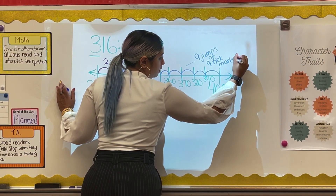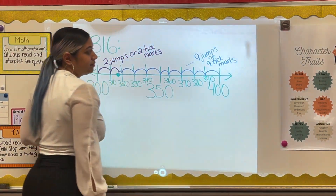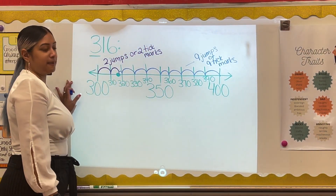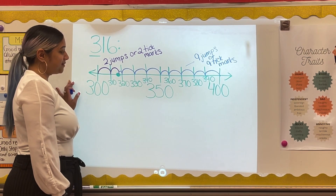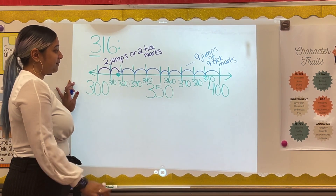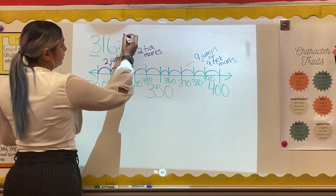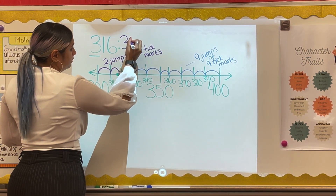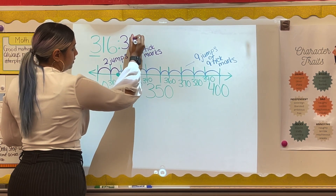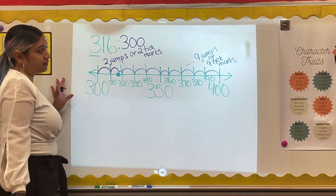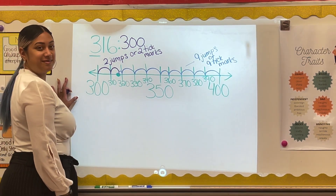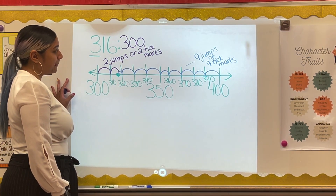When I count from 316, I can see that the number is closer to the interval 300. This means 316 rounded to the nearest 100 is 300.